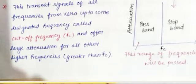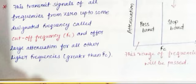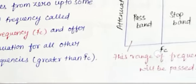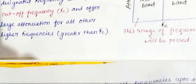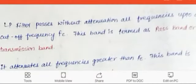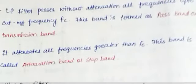The low pass filter transmits signals of all frequencies from zero up to some designated frequency called the cut-off frequency, and provides large attenuation for all higher frequencies. Below the cut-off frequency the signal passes, and above the cut-off frequency the signal is stopped. Low pass filter passes without attenuation all frequencies up to the cut-off frequency. This band is termed the pass band, or transmission band.